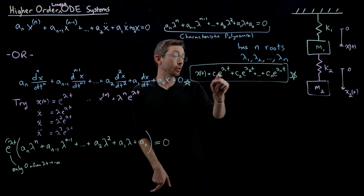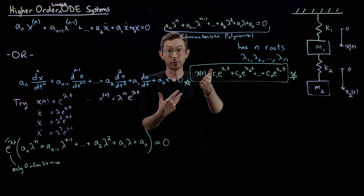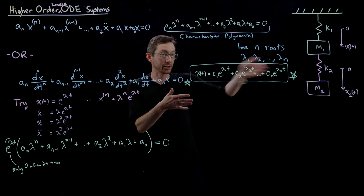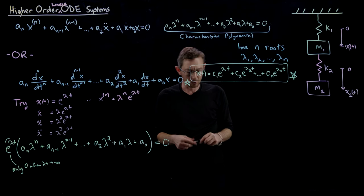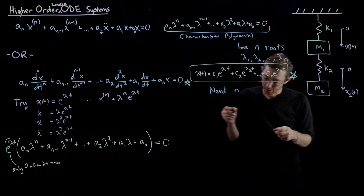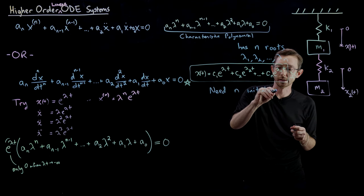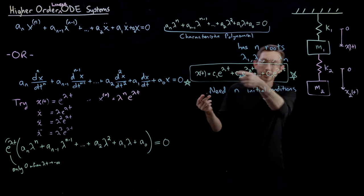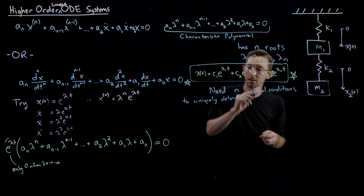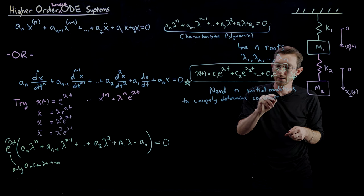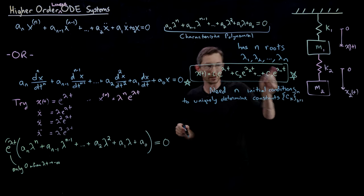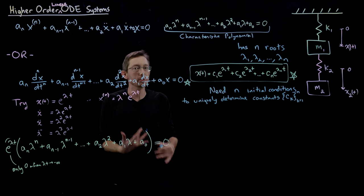If I want to determine the actual coefficients for a particular solution given a specific set of initial conditions, I would have to use those initial conditions to satisfy these coefficients. Essentially, what you would do is you need n initial conditions to uniquely determine these constants — I'll call them {cₖ} for k = 1 to n.